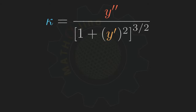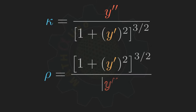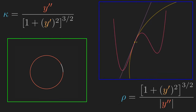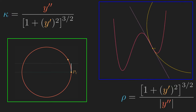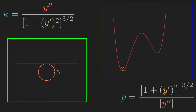And of course, the reciprocal of this gives the radius of curvature: rho is equal to the quantity 1 plus y prime squared, raised to the three-halves power, all over the absolute value of y double prime. We take the absolute value of y double prime because radius is a quantity for length, which cannot be a negative value. Thank you for watching. I hope you learned something. Have a good day — see you in our next video. Bye-bye!